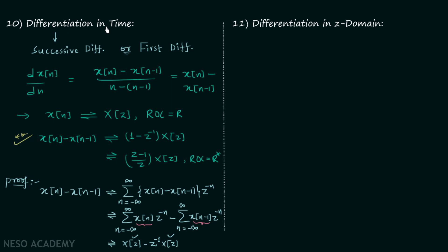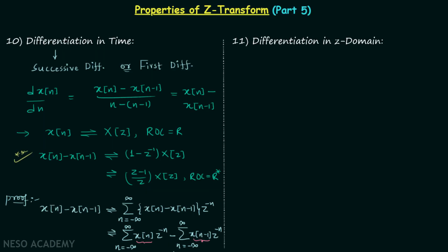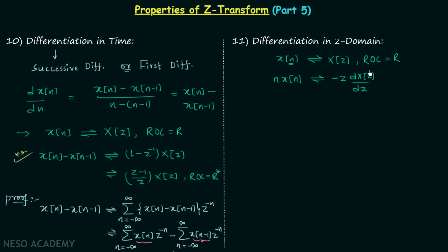Now we move on to the 11th property: differentiation in Z domain. Let there be a signal x[n] having Z transform X(z) with region of convergence R. If you multiply n to signal x[n], the corresponding Z transform equals minus Z times dX(z)/dz. Here we have differentiation of the Z transform multiplied by minus Z, and the region of convergence remains the same.